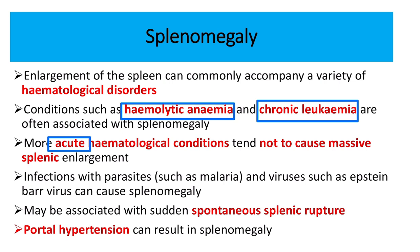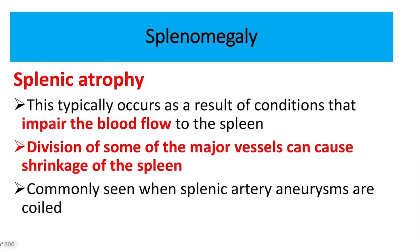Infections such as malaria and Epstein-Barr virus are also responsible for splenomegaly, but they do not cause this type of huge splenomegaly. Massive splenomegaly may be associated with spontaneous splenic rupture, and portal hypertension can also develop as a result.